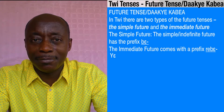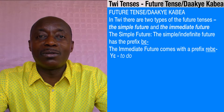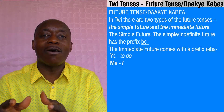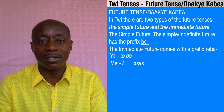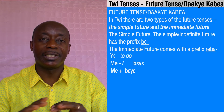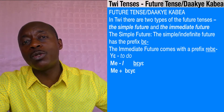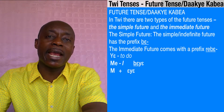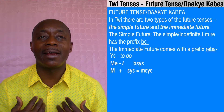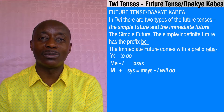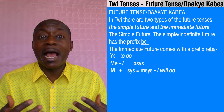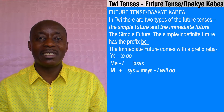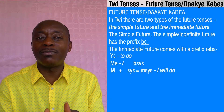Let's take a verb like 'ye,' which means 'to do.' If I want to say 'I will do,' I write 'me' (which is I) and then preface the verb 'ye' with 'be.' So we have 'me' plus 'be.' What happens is that 'me' will lose the 'e' and 'be' will also lose the 'b,' so we have 'm' plus 'a' and we get 'ma' — 'meye.' That means 'I will do.' It doesn't give you the impression that I'm going to do it soon — just sooner or later.